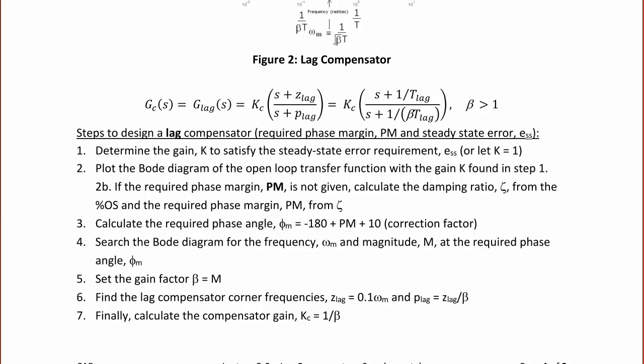Note that 10 is just a correction factor, so 5 or 10 would be acceptable. Step 4: Search the Bode diagram for the frequency omega sub m and the magnitude M at the required phase angle phi sub m. Step 5: Set the gain factor beta equal to M found in step 4. Step 6: Find the lag compensator corner frequencies — z-lag equal to 0.1 times omega sub m, and p-lag equal to z-lag over beta. Finally, calculate the compensator gain KC equal to 1 over beta.